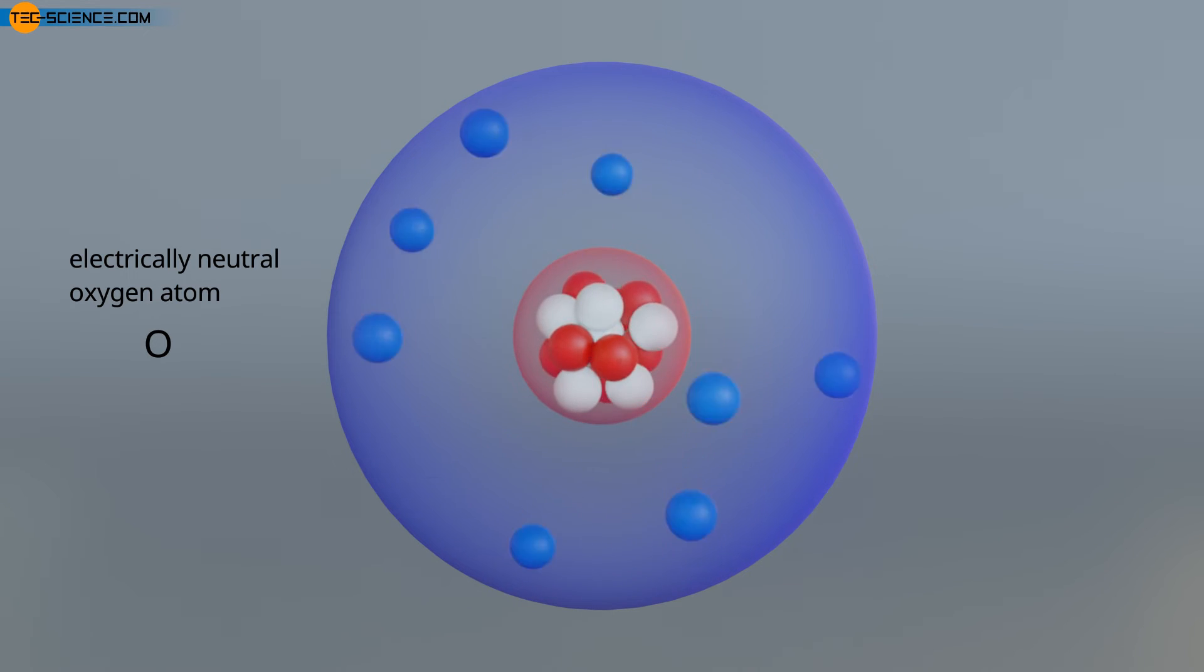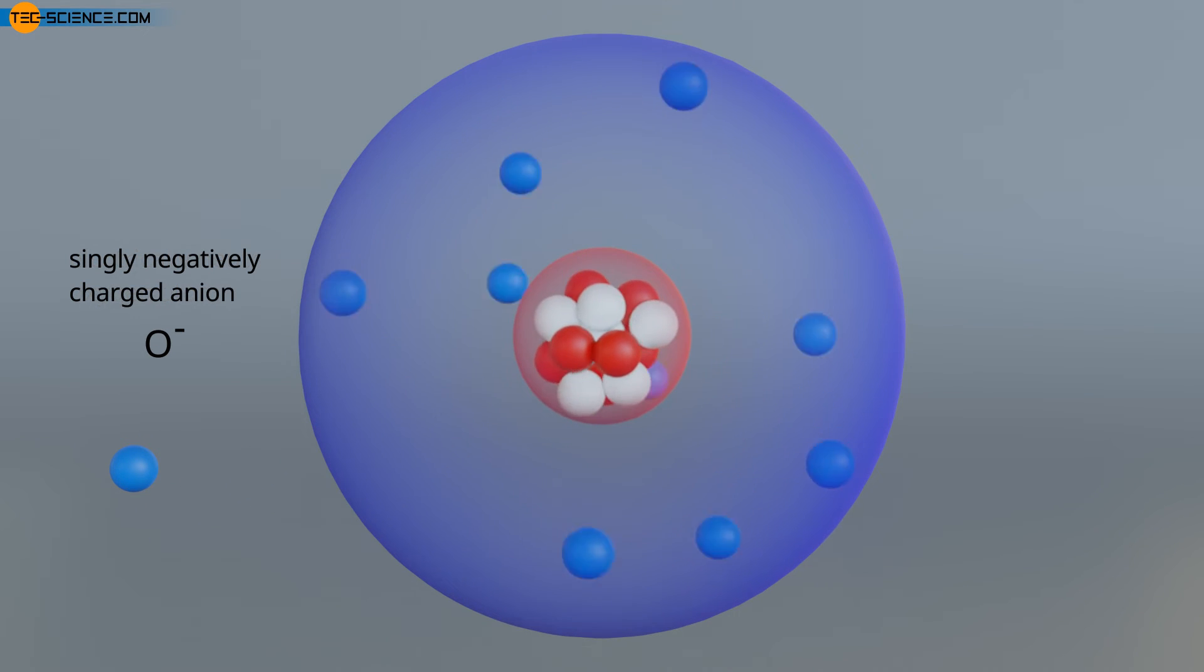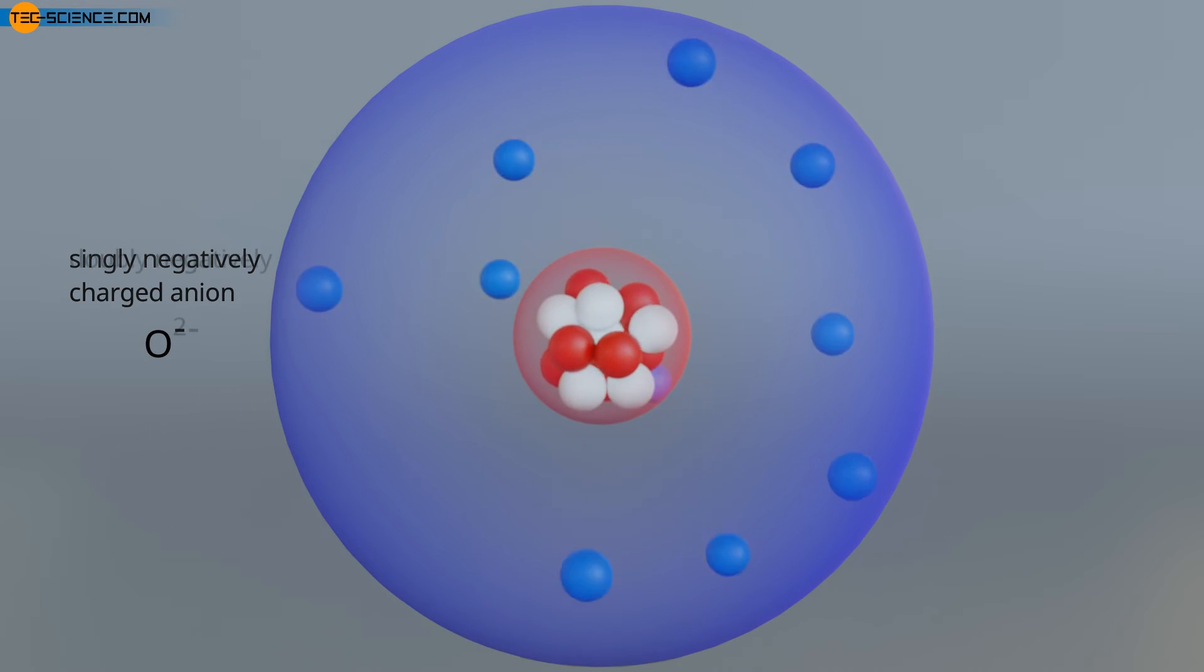With excess of electrons, the atom is negatively charged. A negatively charged ion is referred to as an anion. When an electron is absorbed, it is then a singly negatively charged anion. If two electrons are added, this is referred to as a doubly negatively charged ion.